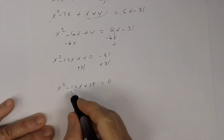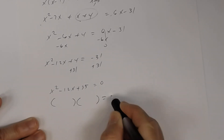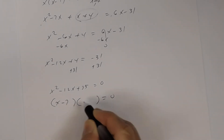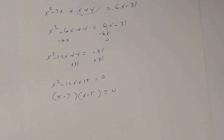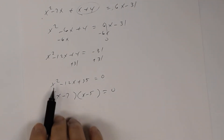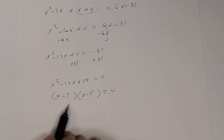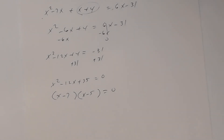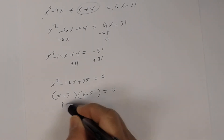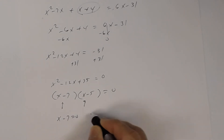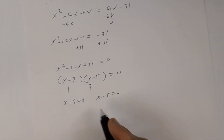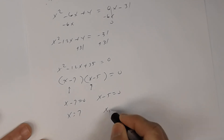Let's go ahead and factor this quadratic. When I factor x squared minus 12x plus 35, I get (x minus 7)(x minus 5). Check: x times x is x squared; negative 7x and negative 5x is negative 12x; and negative 7 times negative 5 is positive 35. Using the zero factor property, x minus 7 equals zero gives x equals 7, and x minus 5 equals zero gives x equals 5.